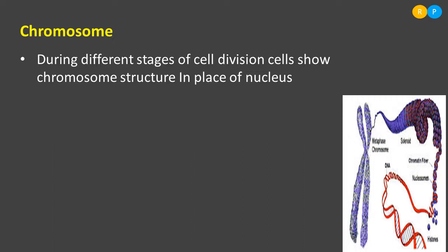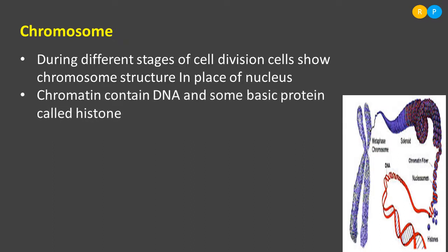Instead of the nucleus, we can see one more structure in the cell, that is chromosomes. So chromosome is a structure that can be found in the cell during different stages of cell division. In interphase we can't see the chromosome because chromosome formation starts only in the first stage of cell division. In different stages of cell division, cells show chromosome structure in place of nucleus.